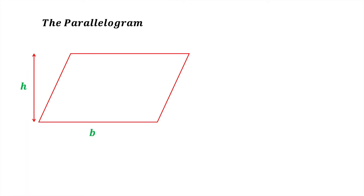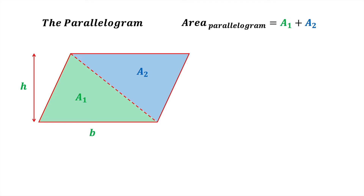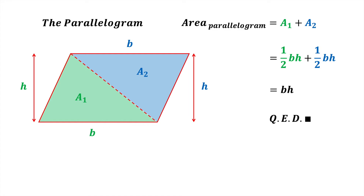Now let's consider the parallelogram with base B and height H. First let's divide the parallelogram into two triangles as shown. Again this gives us two areas a1 and a2. We can see that the area of the parallelogram is the sum of the triangular areas a1 and a2. The base of each triangle equals the base of the parallelogram and the height of each triangle equals the height of the parallelogram. Therefore the area of the parallelogram equals half base times height of the first triangle plus half base times height of the second triangle. These two like terms sum together to give the area of the parallelogram as base times height.